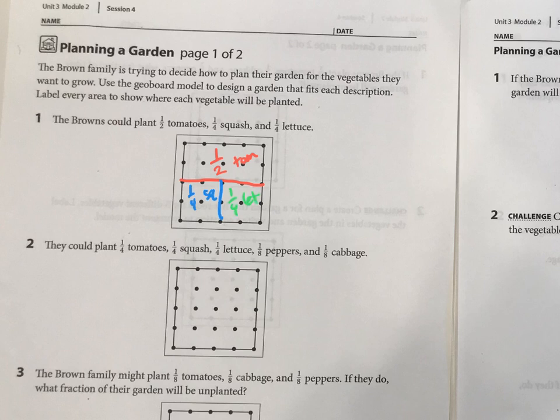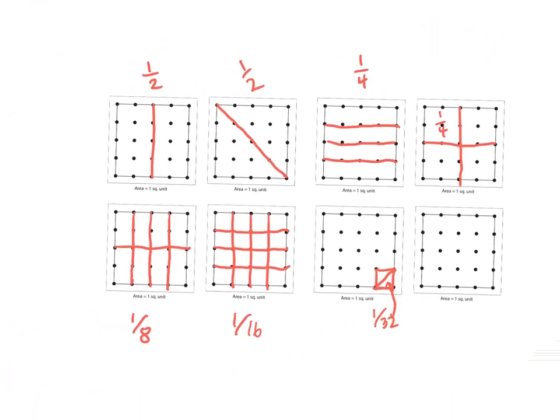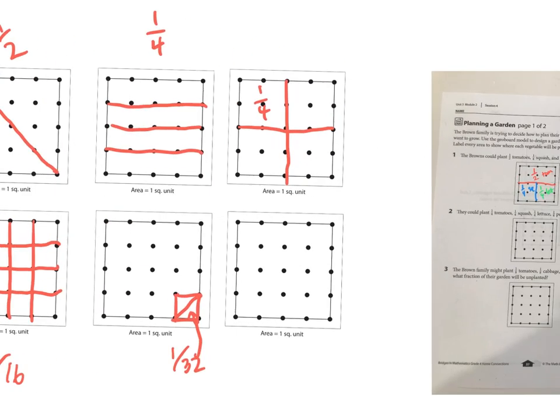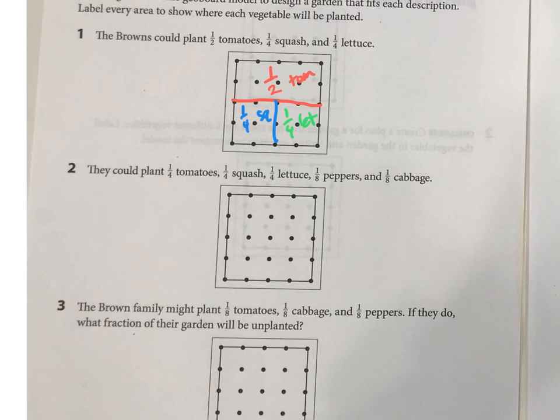Then down here, one fourth tomatoes, one fourth squash, one fourth lettuce - one fourth should be easy. Let's remind ourselves, what does one eighth look like? One eighth of this 16-grid box would be two boxes. Those would be one eighth. So I would have peppers would be like that there.